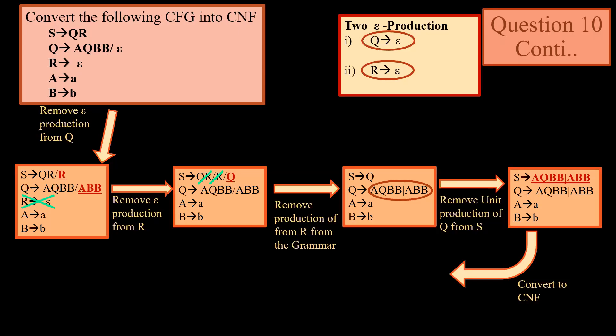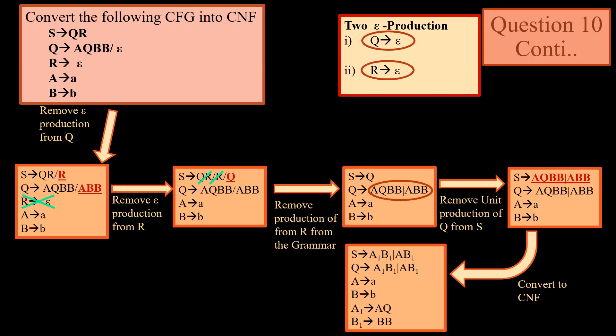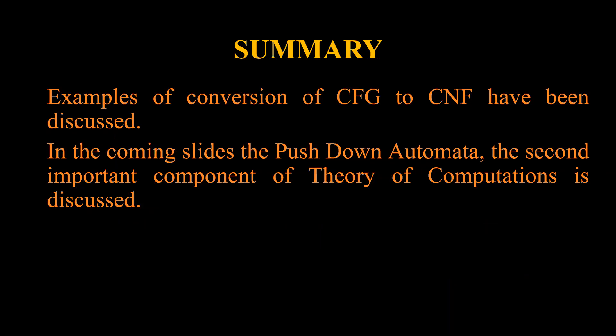We remove that unit production by replacing all the productions on the right side of capital Q. Then we convert this into Chomsky Normal Form. The final output has two new productions: A1 → AQ and B1 → AB. This is how we have converted this grammar into Chomsky Normal Form. In the coming slides we will be discussing about pushdown automata, the second important component of theory of computation. Thanks for watching.